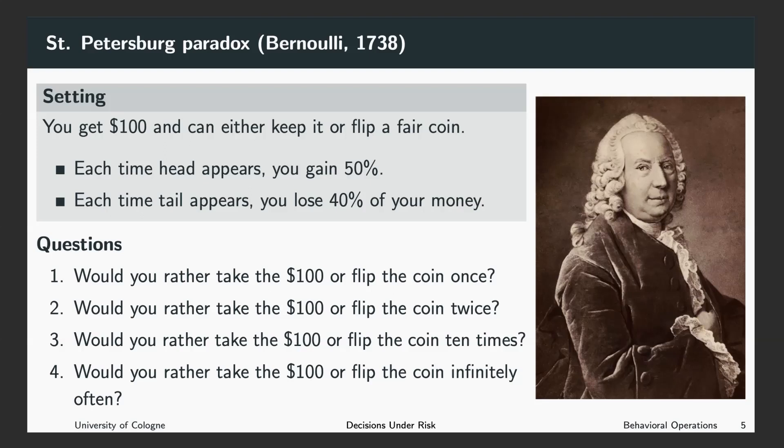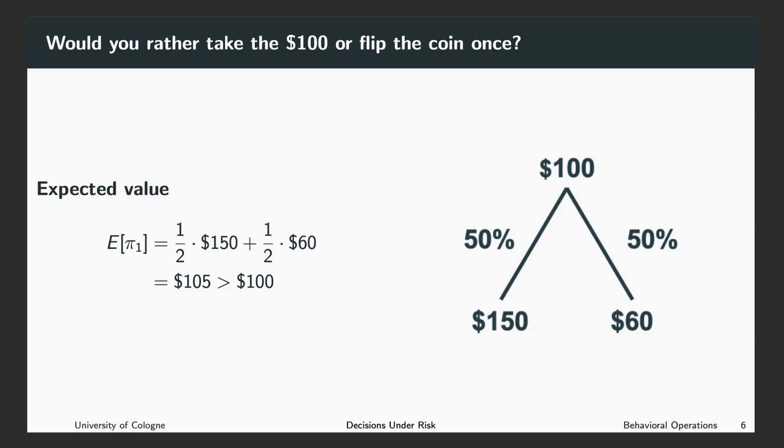On the next slides, we will go through these questions and see what theory tells us about it. Let's start with question one. You have the chance. Either you take $100 or you invest the $100 and throw the coin once. If you throw the coin once, two things might happen. Either head shows and you will end up with $150 or tail shows and you will end up with only $60 left. How can you be guided in this decision?